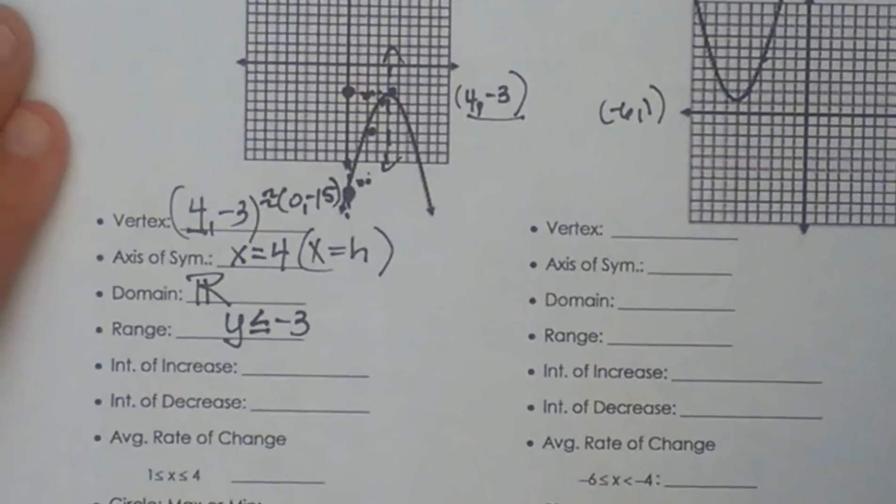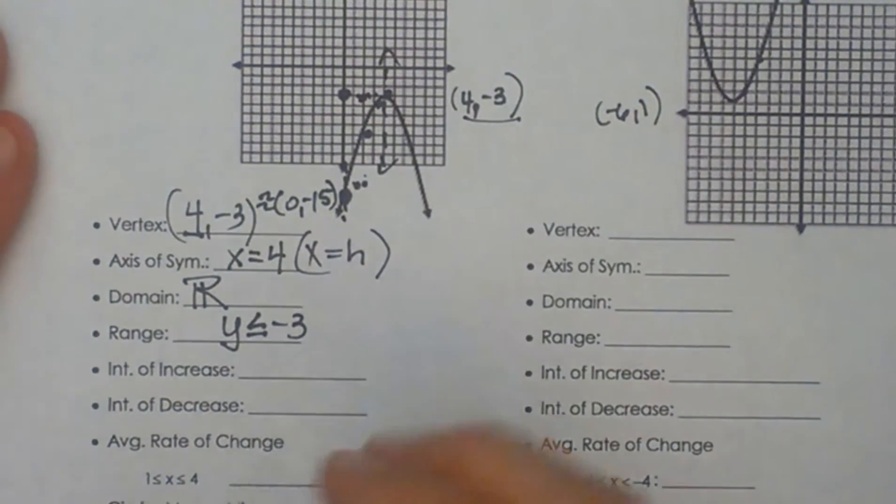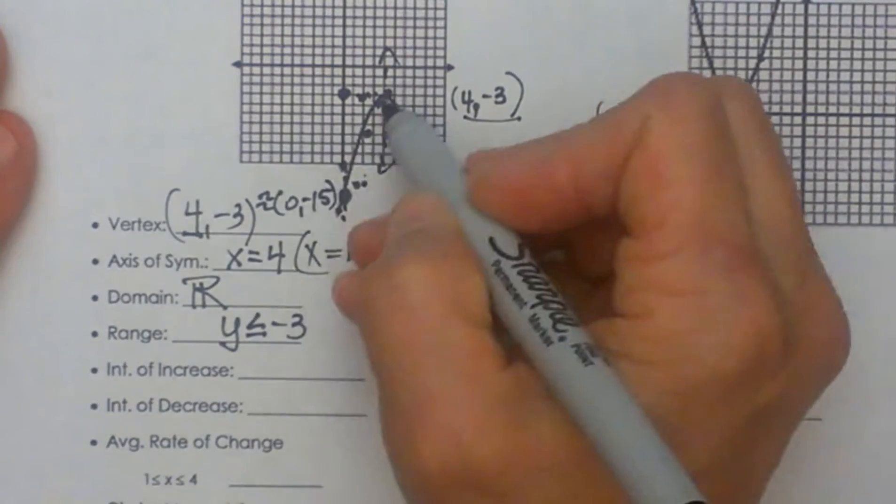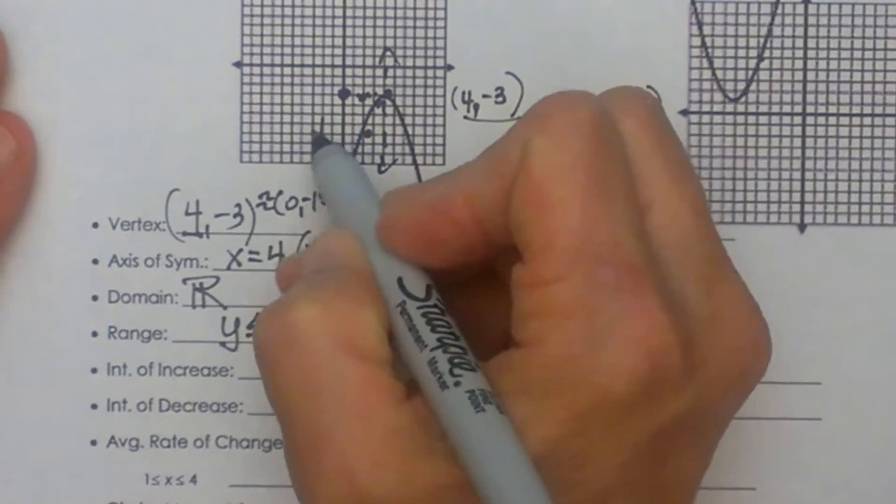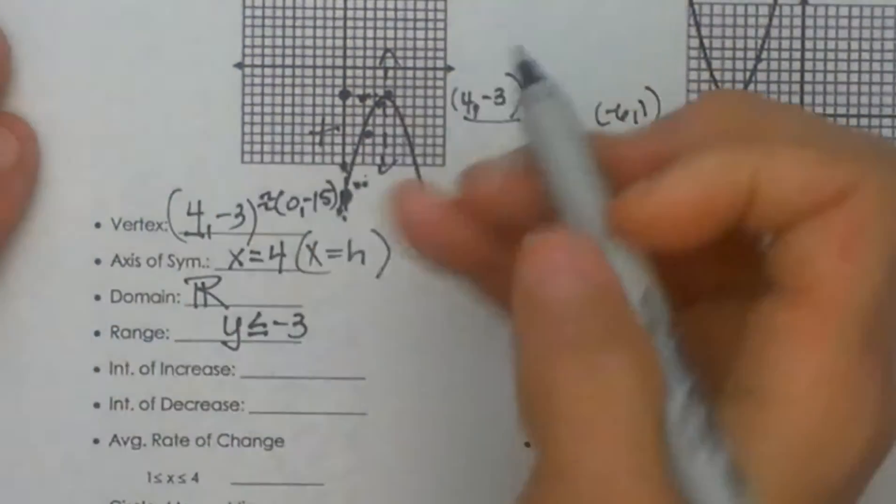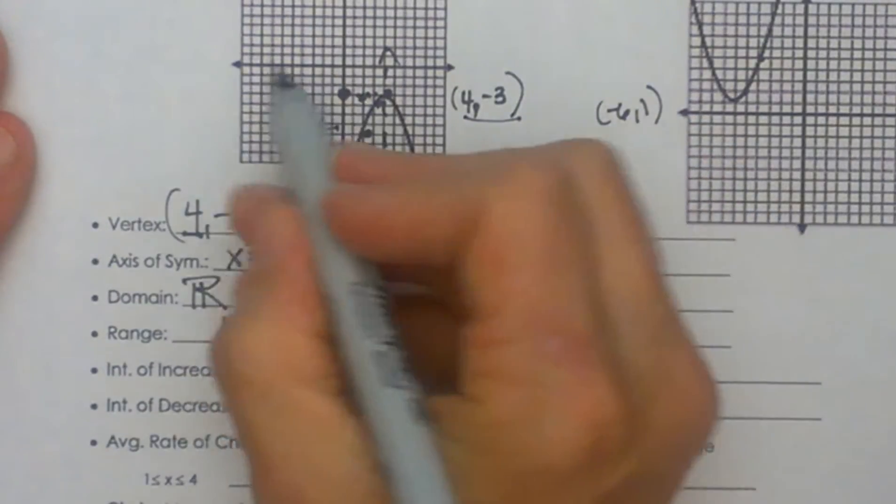Now let's look at our interval of increase and decrease. Interval of increase is where the graph is going up left to right. So this left side of the parabola is our interval of increase. How do we write that? Well we read it off the x axis.